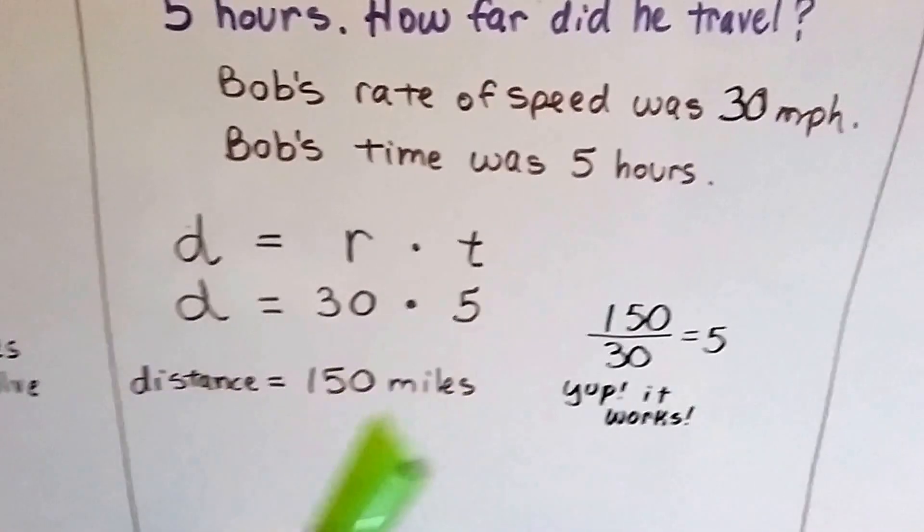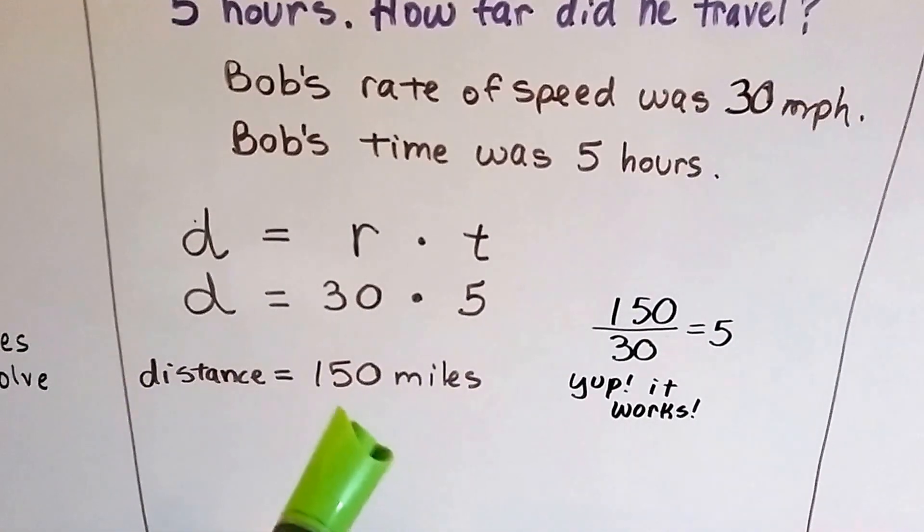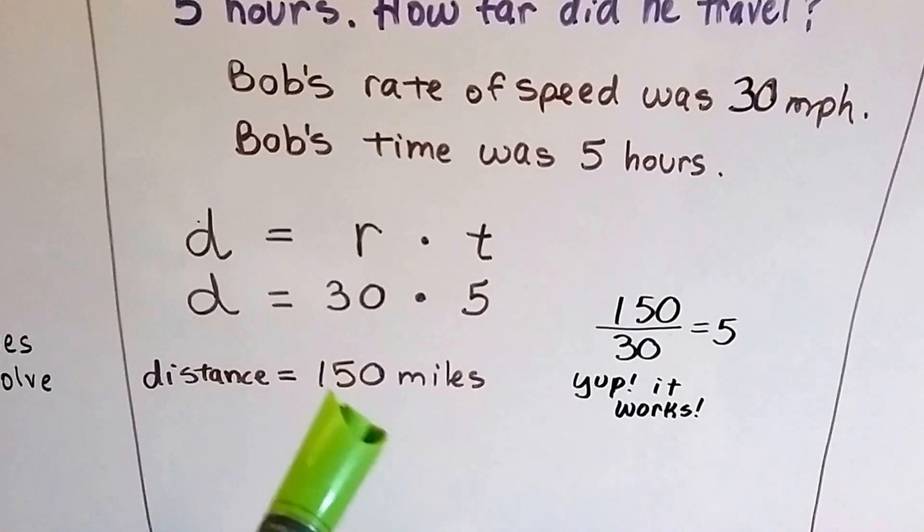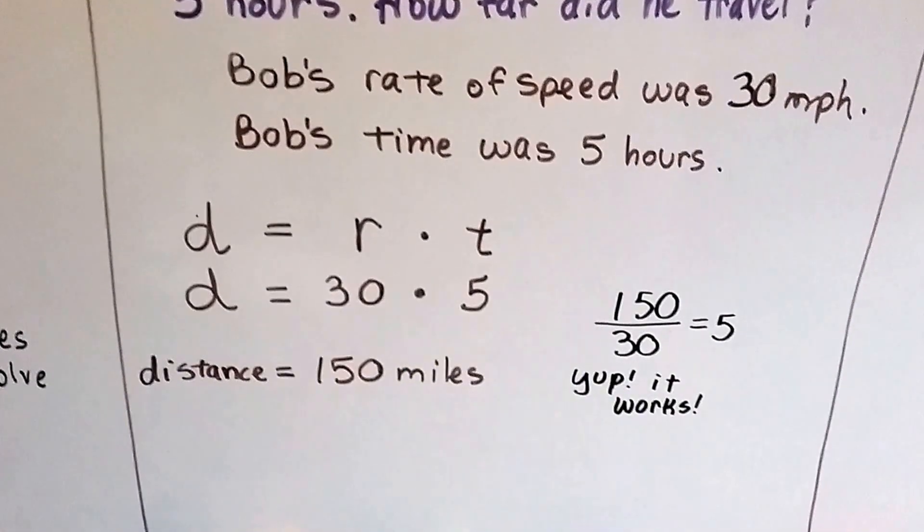And we can use division, the inverse, to check it to make sure we did it correctly. 150 divided by 30 is 5, 150 divided by 5 is 30. Yep, it works.